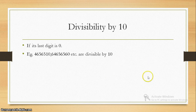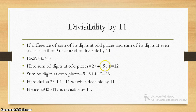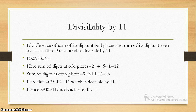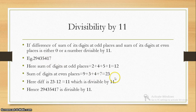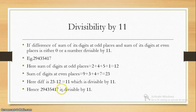Divisibility by 10: if the last digit is 0, you can directly say it is divisible by 10. Divisibility by 11: if the difference of the sum of its digits at odd places and the sum of its digits at even places is either 0 or divisible by 11, then the number is divisible by 11. Consider the example: sum of digits at odd places is 2 + 4 + 5 + 1 = 12; sum of digits at even places is 9 + 3 + 4 + 7 = 23. The difference is |23 − 12| = 11, which is divisible by 11, hence the whole number is divisible by 11.